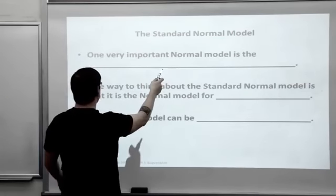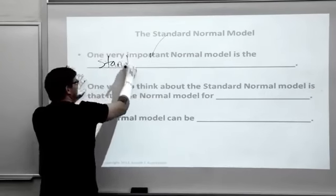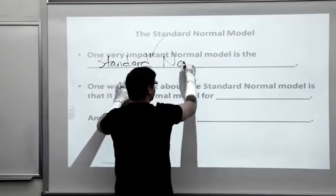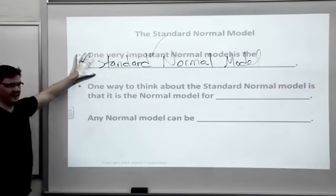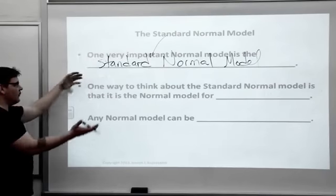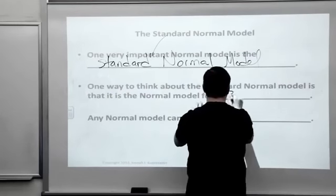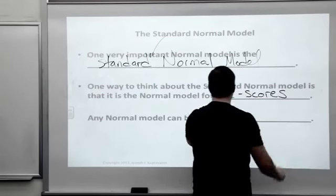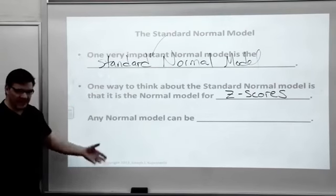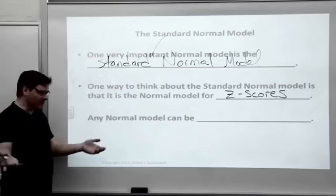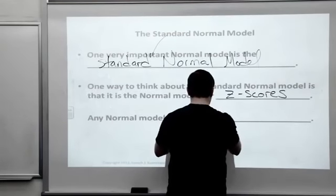One very, well, the most important normal model is the standard normal model. One way to think about this, here's where we link back to Z-scores: the standard normal model is the normal model for Z-scores. Like I've said, we can take any normal model - the model for women's heights, men's heights, IQ scores here, IQ scores at Harvard - they can all be standardized. They can all be converted to Z-score normal model. Any normal model can be standardized.